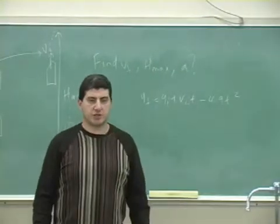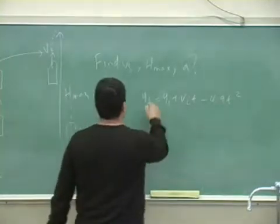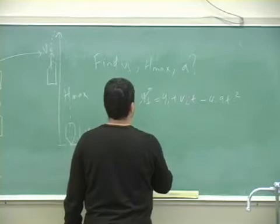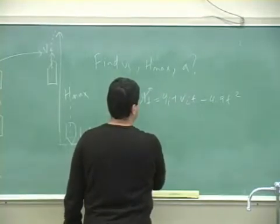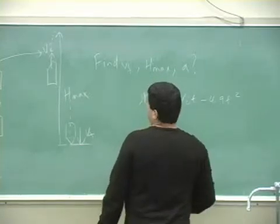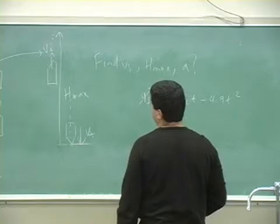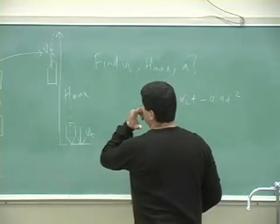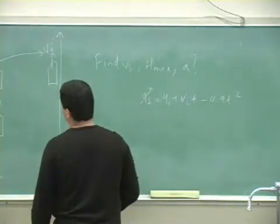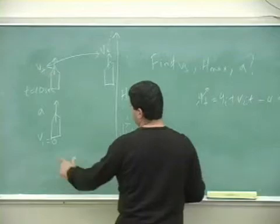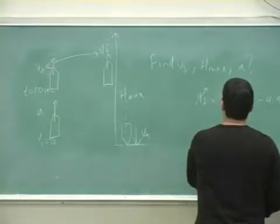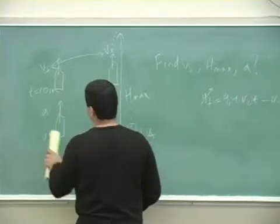I've seen people do this kind of problem like this: Y final equals Y initial plus V initial T. You can't really even do it that way because the initial velocity would be zero. So you can't really even do it that way.